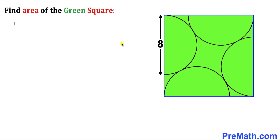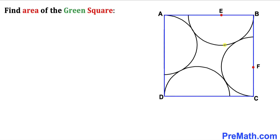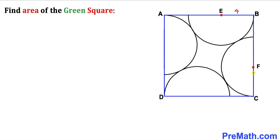Let's go ahead and get started. Here's our very first step: let's focus on these two semicircles on the right-hand side. We know the diameter of this semicircle is eight units, so therefore this radius has got to be half of that — that's going to be four units. Likewise, FC is going to be four units as well. If we can find the length of BF, we can easily find the side length of this square.